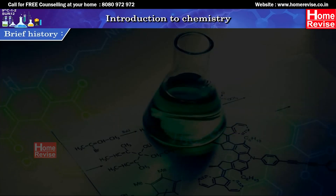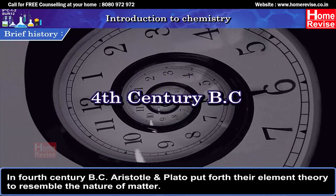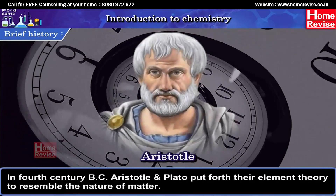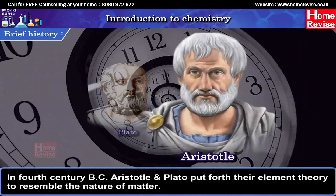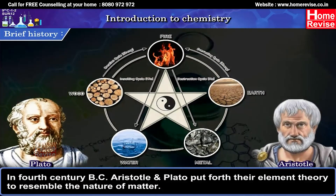Brief History. Around 400 BC, the behavior and nature of matter was developed and conclusions were drawn. In the 4th century BC, Aristotle and Plato put forth their element theory to resemble the nature of matter.